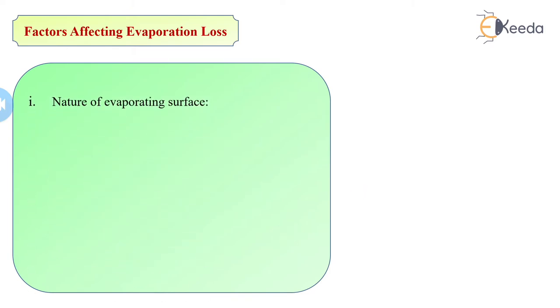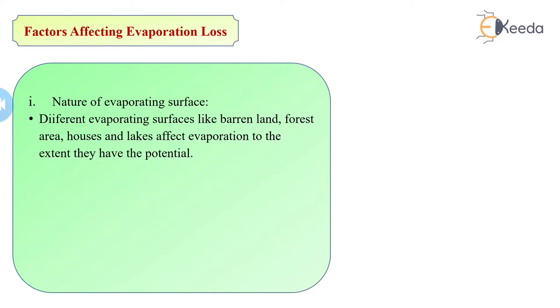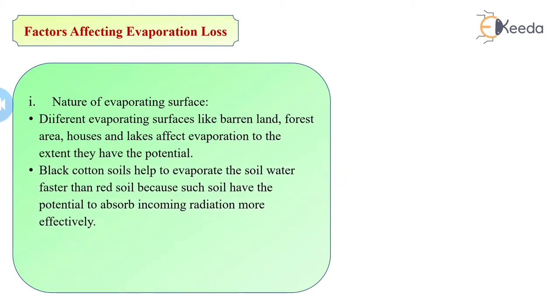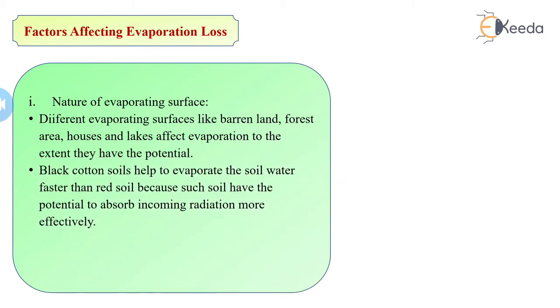The factors affecting evaporation loss. First is the nature of evaporating surface. Different evaporating surfaces like barren land, forest area, houses and lakes affect evaporation to the extent they have the potential. Black cotton soil helps to evaporate soil water faster than red soil because such soil has the potential to absorb incoming radiation more effectively. Evaporation from wet soil is faster and reduces gradually as the soil becomes dry.